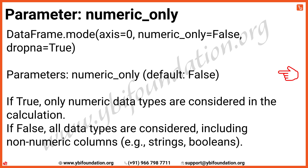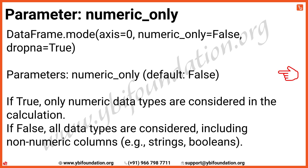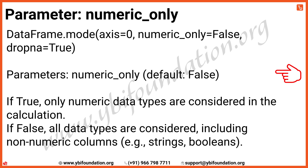The next parameter is numeric_only. When set to True, the mode is calculated only for numeric columns, excluding non-numeric data types such as strings and booleans. When set to False, which is the default, the mode will include all columns, both numeric and non-numeric.